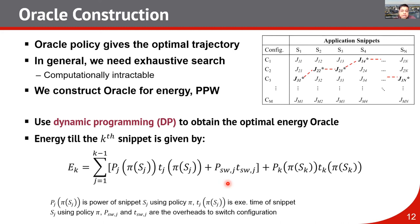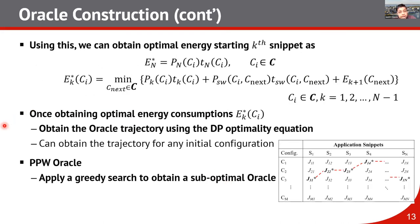With that expression for power consumption, latency, and switching overhead, we obtain optimal energy starting at the k-th snippet, then obtain the optimal trajectory using the dynamic programming optimality equation. Note that dynamic programming applies here because energy is an additive function. If the objective is performance-per-watt, which is not additive, we instead apply a greedy search to obtain a suboptimal oracle.